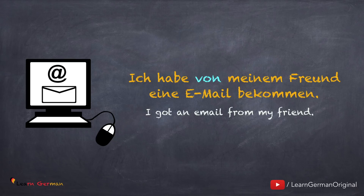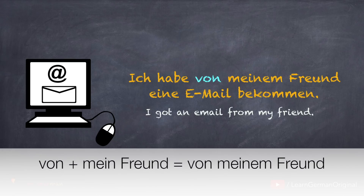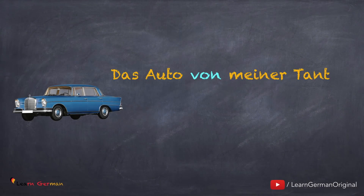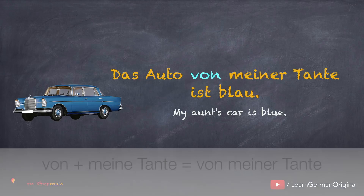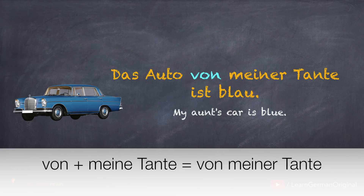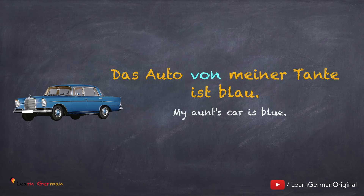Since Freund is masculine, 'mein Freund' will change to 'meinem Freund' when you are using the preposition VON. Similarly, in the next sentence: 'Das Auto von meiner Tante ist blau.' Since the article for Tante is DIE, MEINE will change to MEINER. This was the case with the possessive article.